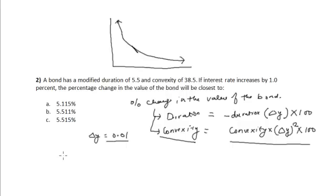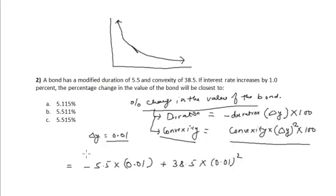Putting that in the equation, my percentage change in the value of the bond will be equal to minus 5.5 into 0.01 plus 38.5 into 0.01 whole square, and this whole is multiplied by 100, which is equal to minus 5.115 percent.